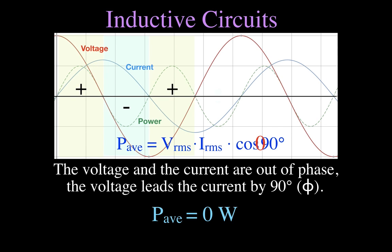For the last quarter cycle, the voltage has moved back into the positive area but the current is still negative, so a positive voltage times a negative current results in a negative power. When we take the average of all four quarter cycles — adding the area under each portion of the curve — the positives and negatives cancel out, and the average power is zero.